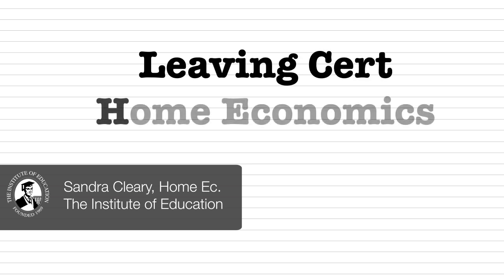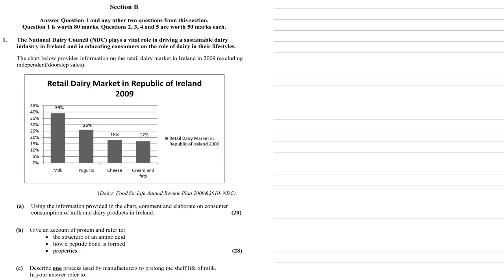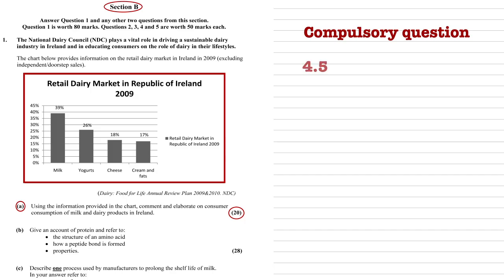Since the introduction of the new home economics syllabus in 2004, students have been asked to analyse a table or pie chart in Part A of Section B on the exam paper. Students should note this is a compulsory question and can be worth anything from 18 to 24 marks, which works out at 4.5 to 6% of the overall grade.